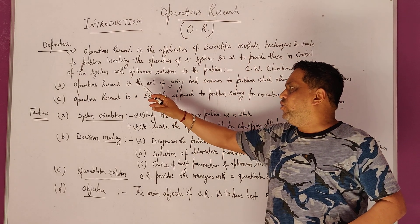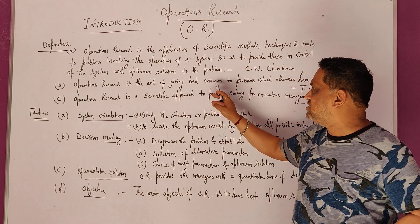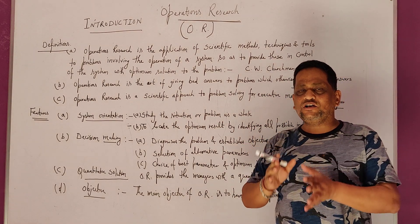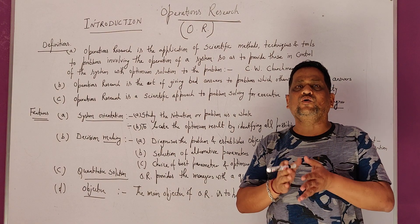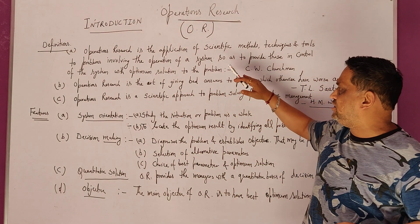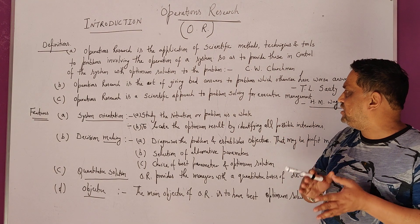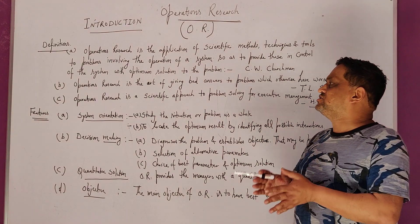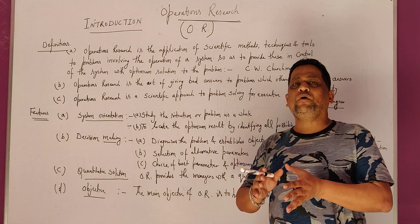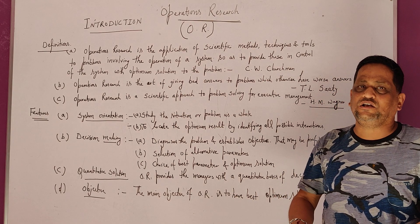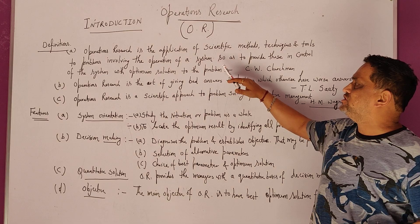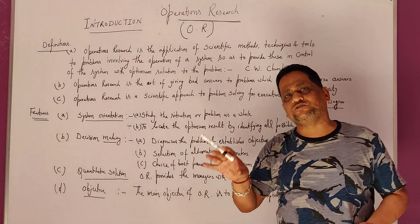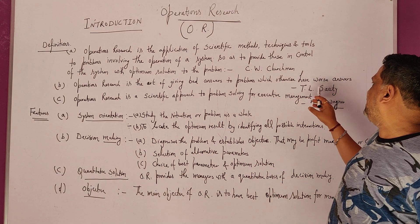Now I am coming to the second definition. Operations Research is the art of giving bad answers to problems which otherwise have worse answers. It is the main task of our position to improve our position. So Operations Research converts a worse position to a bad position — meaning it improves the organization's standing. This definition is given by T.L. Sati.